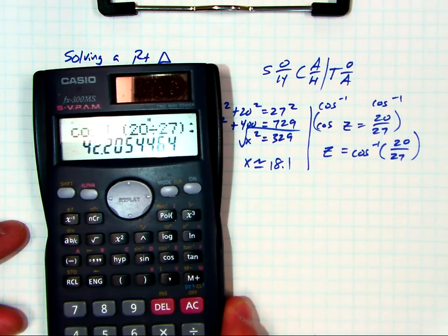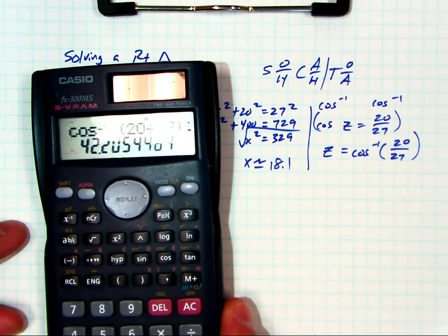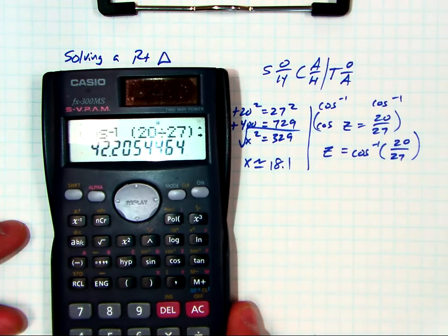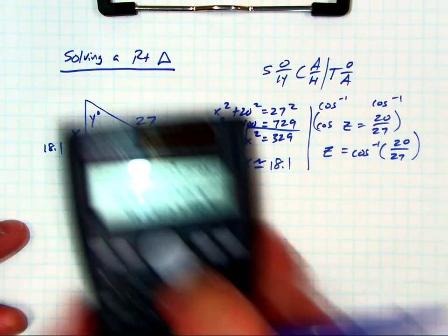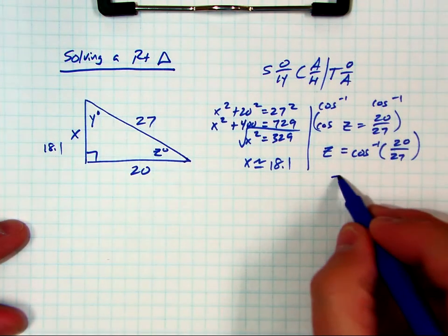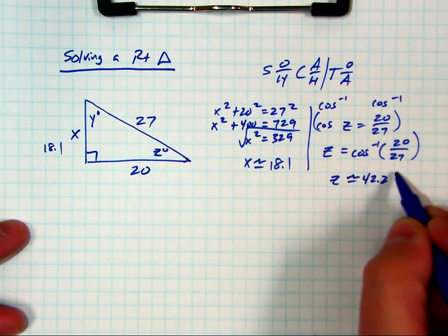Does everybody agree 42.2? I need some independent confirmation. Did anybody else get that on their calculator? Yes? Yes? Yes? All right. So z is equal to 42.2 degrees.